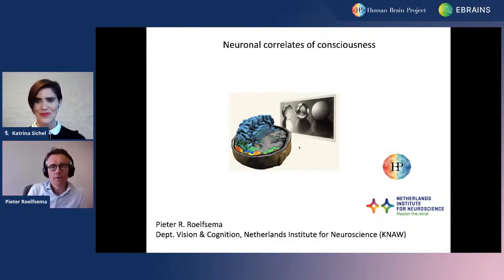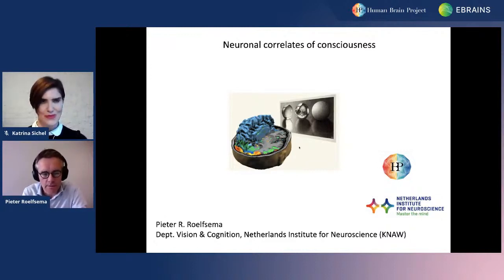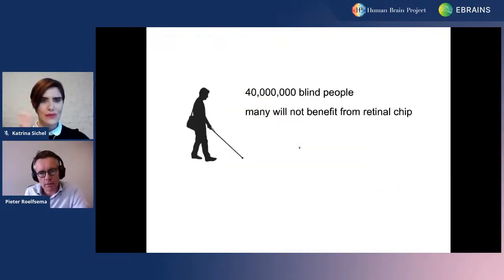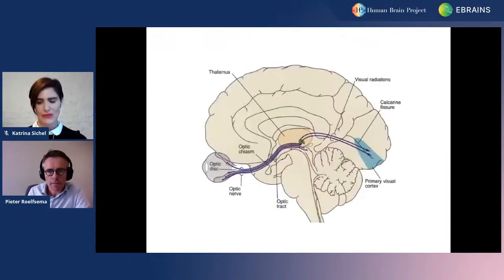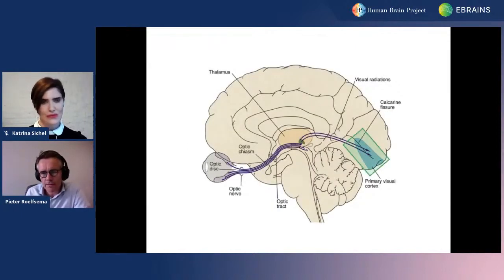Today I would like to talk about how a stimulus may reach or may not reach consciousness, and the potential application of these findings. In the world there are about 40 million people who are blind, and many of those will not benefit from treatment in the eye because the connection between the eye and brain is lost. So for those people, a logical approach would be to make an interface with the visual cortex.